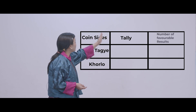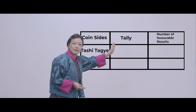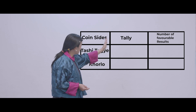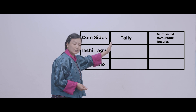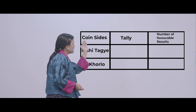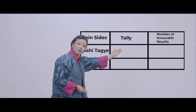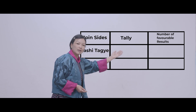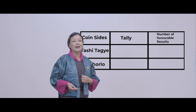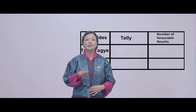The last column shows 'number of favorable results.' There you will count the tally marks and then write in numerals. Are you ready? Should we go with the experiment?